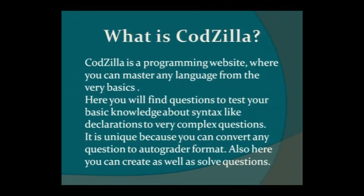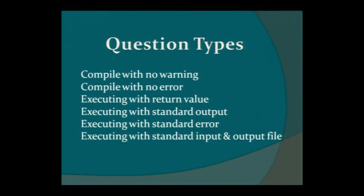As we saw in the demo, Codzilla is the programming website where you can master any language from the very basics to any advanced level. Here you can find questions to test your basic knowledge like syntax, declarations, and also very complex questions. The uniqueness about Codzilla is that you can convert any existing question into this auto-grader format. The different types of questions present on Codzilla are six types: compile with no warning, compile with no error, executing with return value, executing with standard output, executing with standard error, and executing with standard input and output.